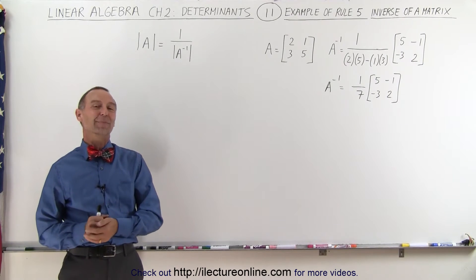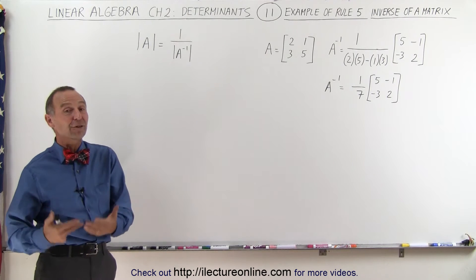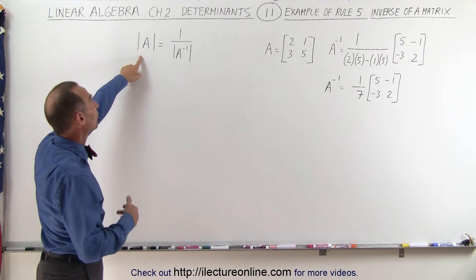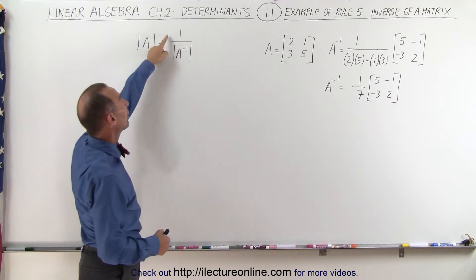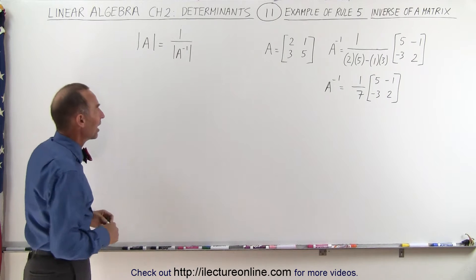Welcome to ElectronLine. Now let's take a look at rule number 5 where we talk about the inverse of a matrix. In other words, the determinant of the matrix A is equal to 1 over the determinant of the inverse of the matrix A.